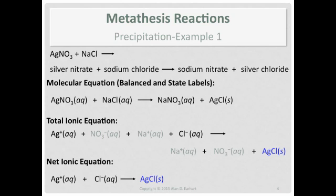A common test for chloride ion in water is to add a little bit of silver nitrate and see if you make a kind of an ivory colored precipitate.